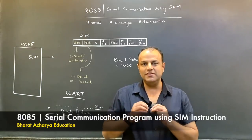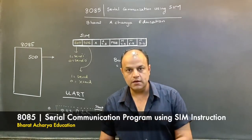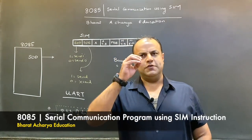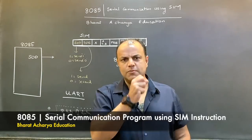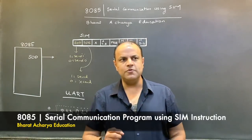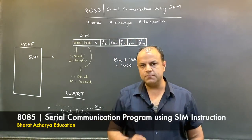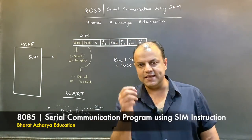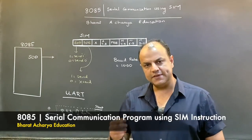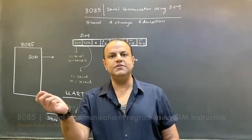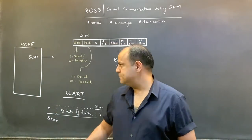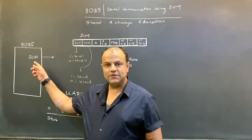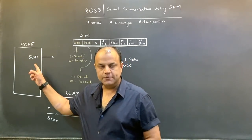How to send serial data using 8085. If you know a little bit about 8085, you know 8085 has a serial port. The pins are called SID and SOD. SID is serial input data, SOD is serial output data. We are going to send data, so obviously we're going to be using the SOD pin.